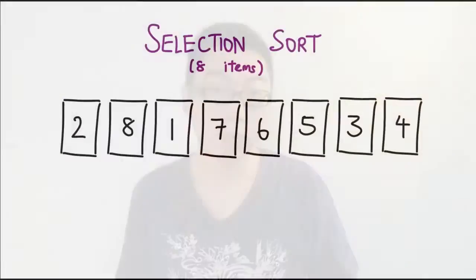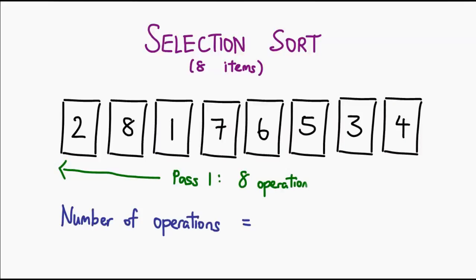In the case of selection sort, let us begin by counting the number of operations. Let's start simple, let's just use an example in which there are 8 items, in other words n equals 8. On the first pass, we have to look through 8 items, and when we're done with that, one item gets put in place.